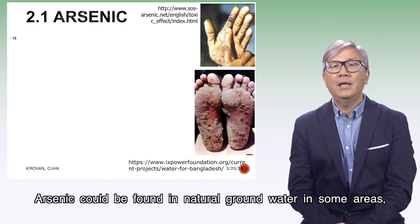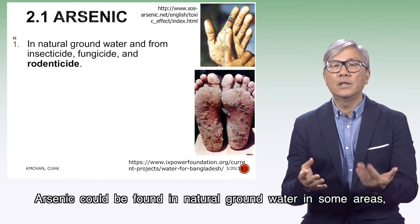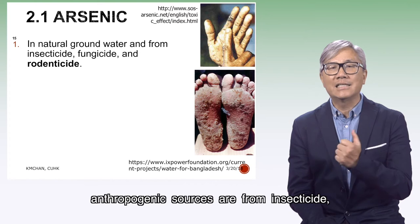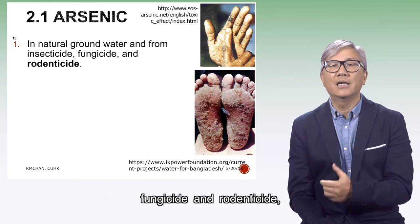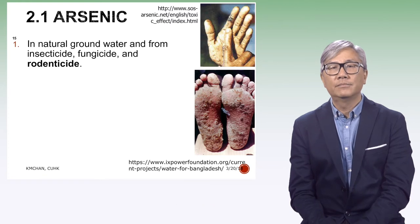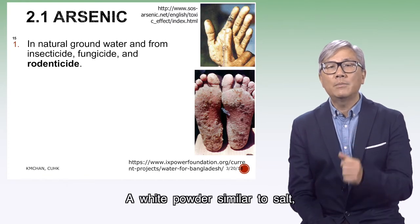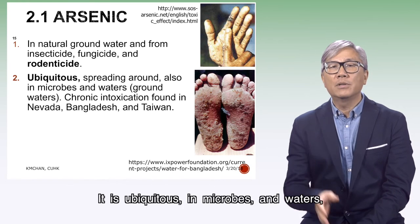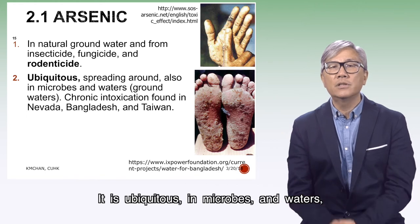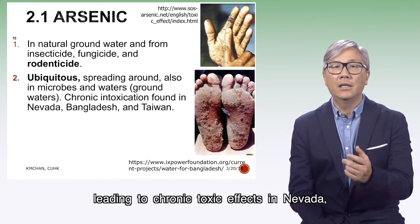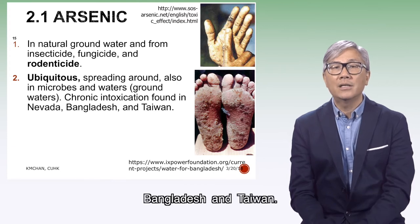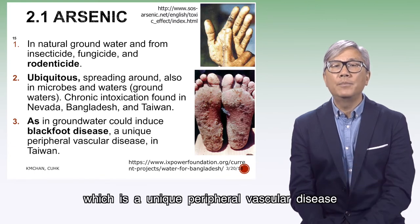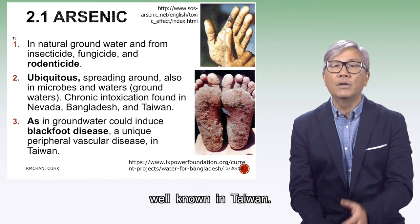Arsenic could be found in natural groundwater in some areas. Anthropogenic sources are from insecticides, fungicides and rodenticides known as arsenic trioxide — a white powder similar to salt but deadly to humans. It is ubiquitous in microbes and mortars, leading to chronic toxic effects in Nevada, Bangladesh and Taiwan. It causes Blackfoot disease, which is a unique peripheral vascular disease well known in Taiwan.